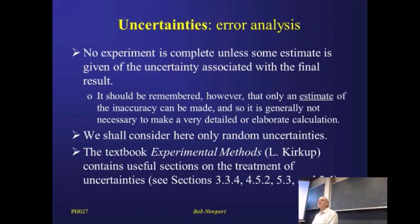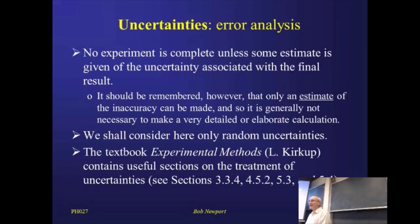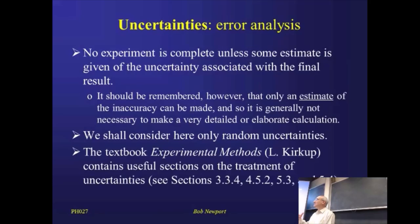I'm only going to talk about random uncertainties — that's really all you're going to be asked to consider in a quantitative sense, associated with numbers. There is another sort of error called a systematic error, which is really important, and you may well need to think about and discuss those in your lab reports. But in terms of the numerical manipulation of numbers, we're going to focus on random errors. I should just tell you what the difference between those two things is.